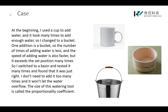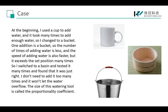At the beginning I used a cup to add water, and it took several additions to reach the required level. So I switched to a bucket — one addition was enough, the number of times was less and the speed faster, but it exceeded the set position several times. I then switched to a basin, tested it several times, and found it just right — not too many additions and no overflow. The size of this watering tool is called the scale factor.